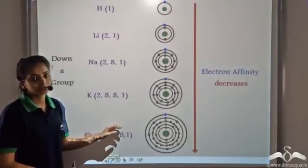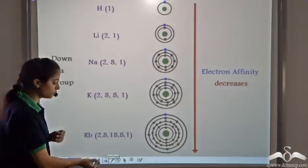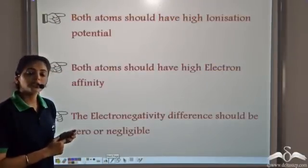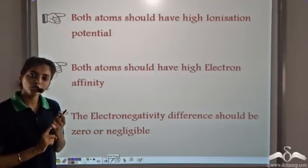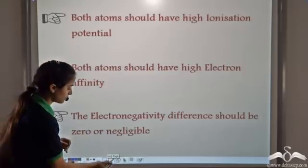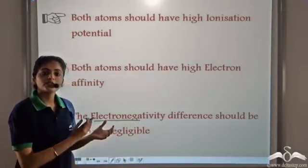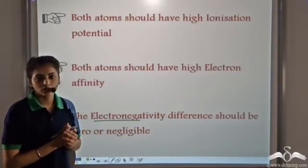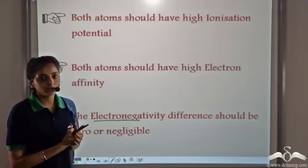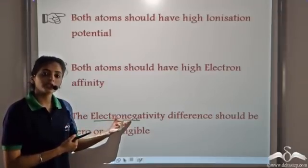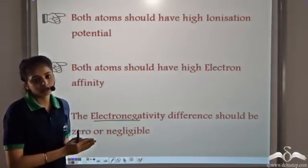The third important condition for the formation of a covalent compound is that the electronegativity difference between the two atoms should either be zero or negligible. Electronegativity is the tendency to attract the shared pair of electrons. Since covalent compounds require the sharing of electrons, the electronegativity difference between the two atoms should either be zero or negligible.